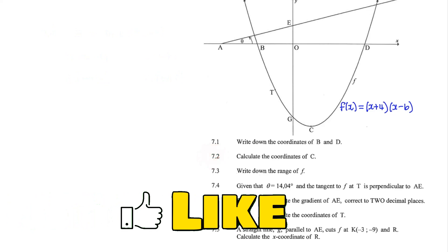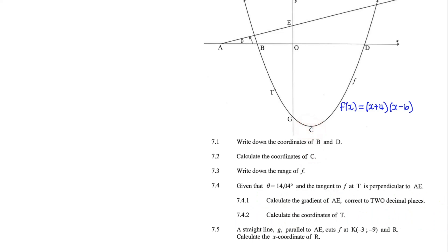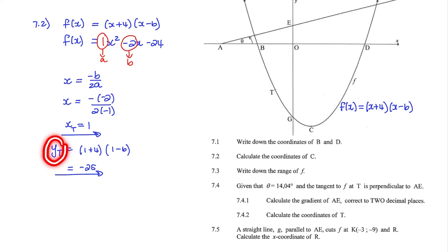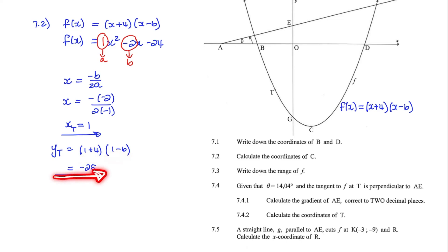Question 7.2: Calculate the coordinates of C, the turning point. Given f(x) equals x plus 4 times x minus 6, multiplying out gives x squared minus 2x minus 24. To find the x-coordinate of the turning point, x equals negative b over 2a, where a equals 1 and b equals negative 2. So x equals negative negative 2 over 2 times 1, giving x equals 1. To find the y-value, substitute x equals 1: y equals 1 plus 4 times 1 minus 6, which equals negative 25. Therefore the coordinates of C are (1, negative 25).